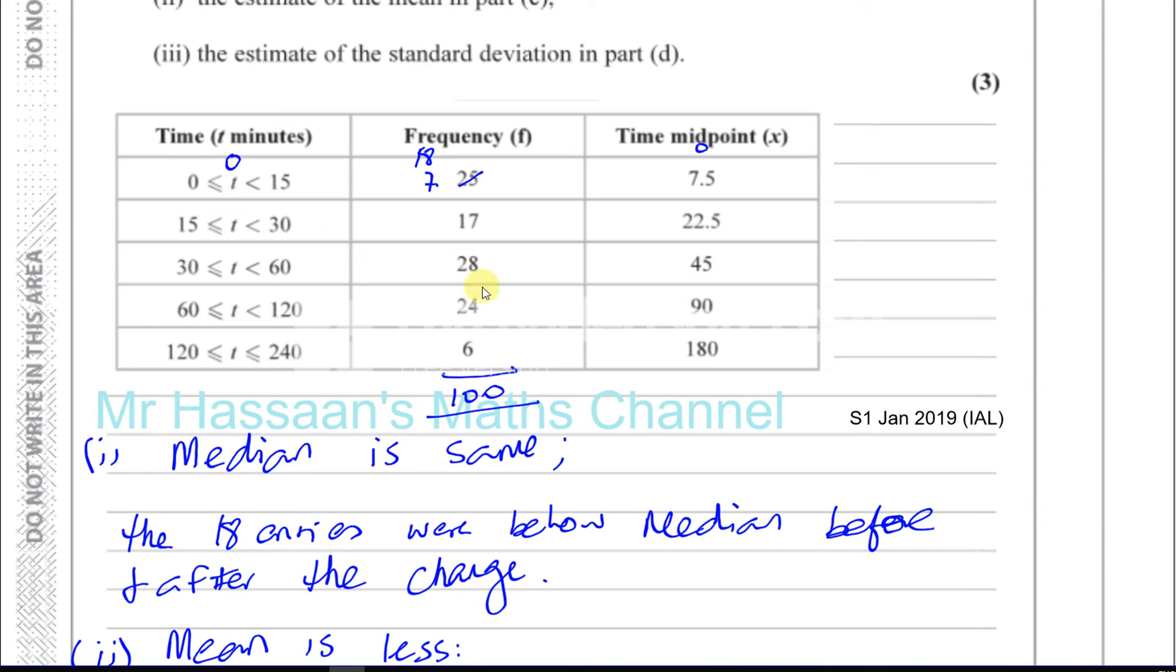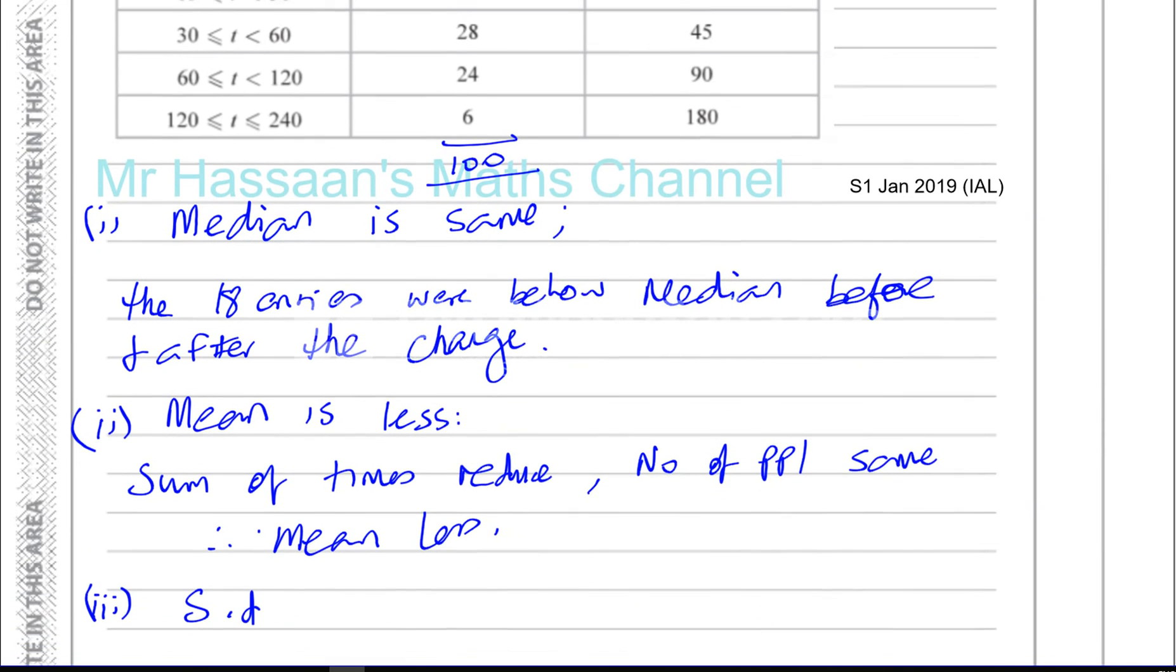But basically, now 18 of those values are going to be zero. So the distance from the mean is going to be greater because the mean was somewhere up here, somewhere around 30 point something, if you remember correctly. But basically, 7 minus that is not as big a magnitude as 0 minus that. So basically the spread of the data is going to increase.